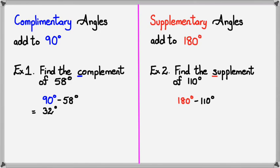and that equals 70 degrees. So 70 degrees is the supplement of 110, or 70 and 110 are supplementary angles.